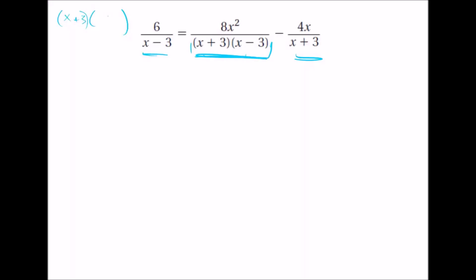And what this does is it actually cancels out like that, and it's just 6 times the one that it didn't have, 6 times x plus 3, which is 6x plus 18.